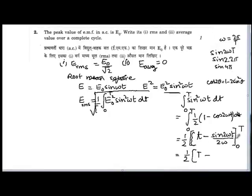And then minus the lower limit. So lower limit would be sin 0 which is 0. So this part will give you 0. So all that you are left with is T/2.